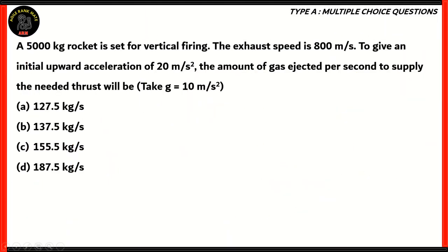So if we were to look at the options, it's clear that option D would be the right answer. So when the 5000 kilogram rocket has an exhaust speed of 800 m/s with an initial upward acceleration of 20 m/s², the amount of gas that's needed to be ejected is 187.5 kg/s.